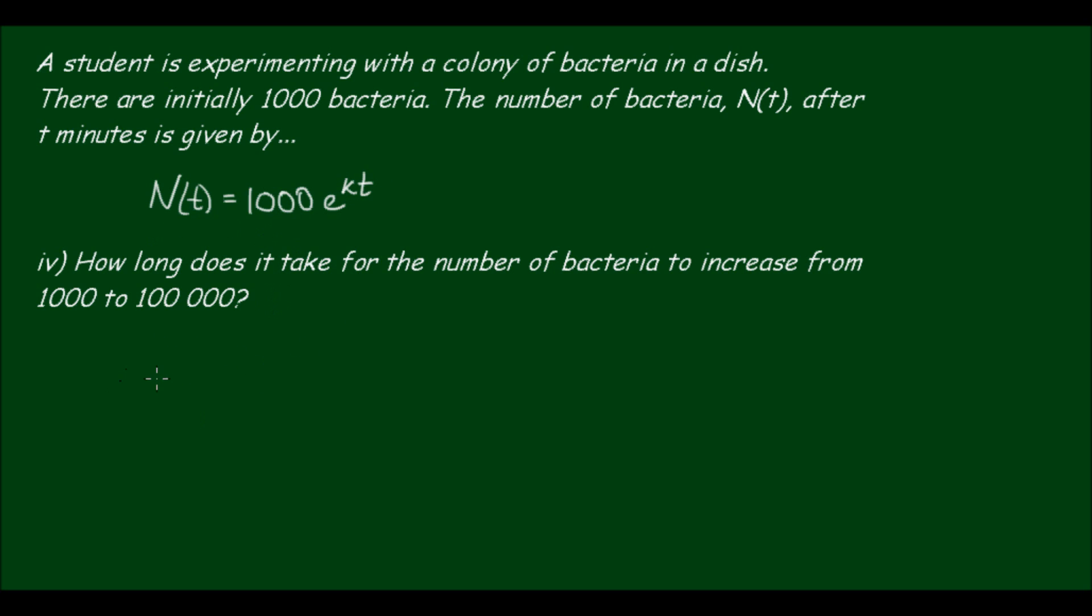So again we divide both sides by 1000 to get e to the kt is equal to n divided by 1000. And again we apply the natural log to both sides and this will give us kt is equal to ln of n divided by 1000. Then, solving for t, we have 1 over k, ln of n divided by 1000.